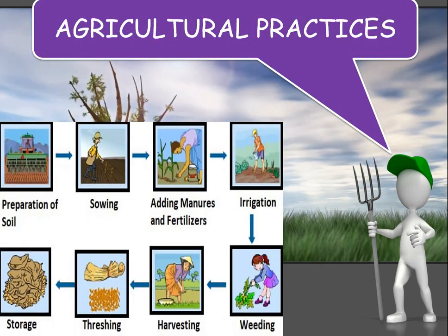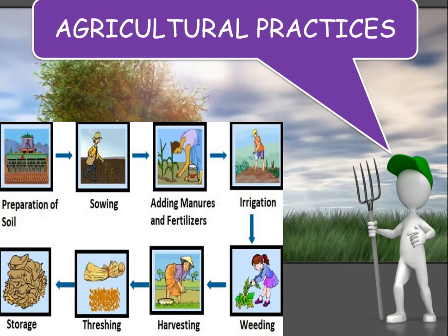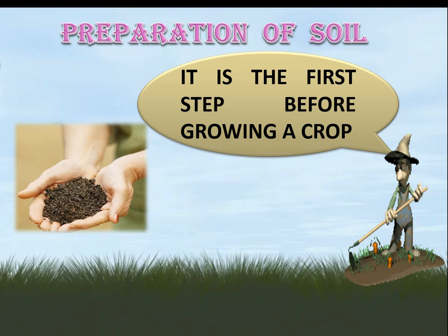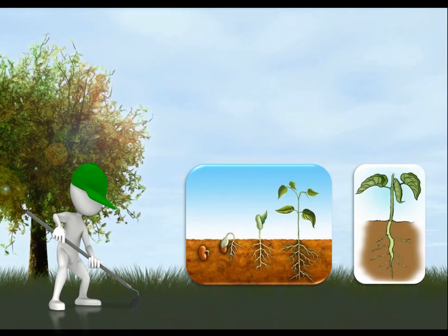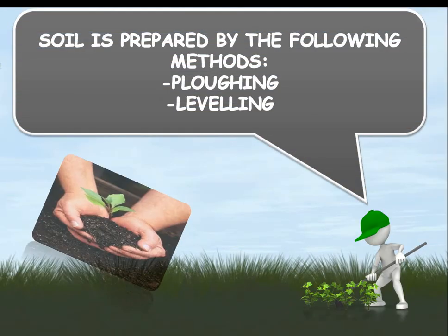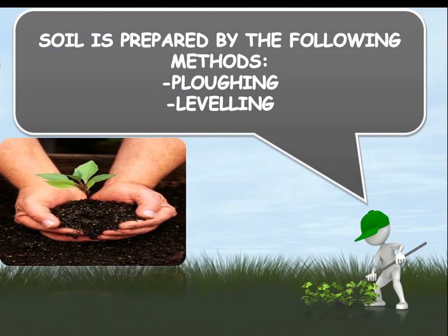Here you can see all the agricultural practices. The first step is preparation of soil. It is essential to prepare the soil so we can have a healthy and good produce. Soil is prepared by the following methods: plowing and leveling.